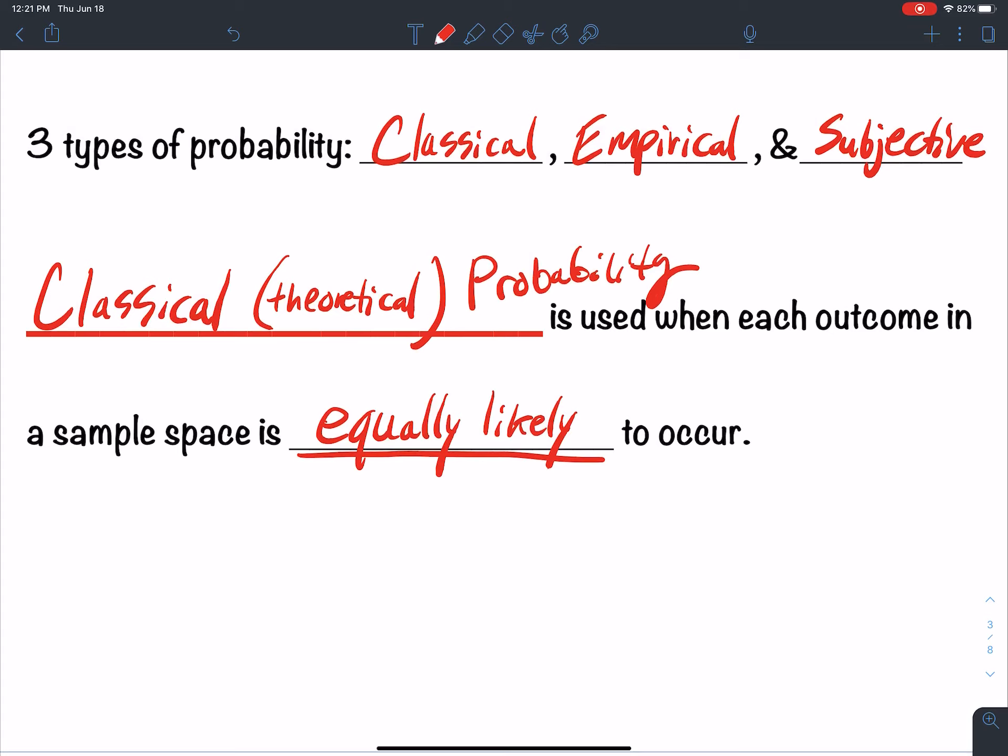Meaning I'm just as likely to get a heads as I am a tails when I flip a coin. There's an equal chance for outcomes.